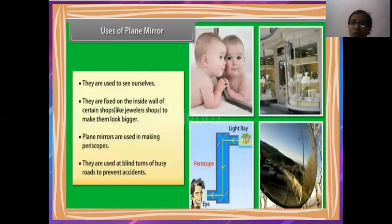Next, the uses of plane mirror. So how are plane mirrors used? First, they are used to see ourselves. We stand in front of the mirror to check if we are looking good or not. They are fixed on the inside walls of certain shops, like jewelry shops, to make them look bigger. And when you are purchasing jewelry, you check how it looks. Plane mirrors are used in making a periscope.